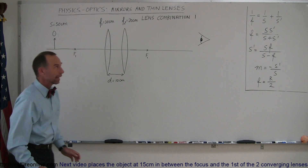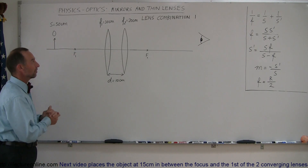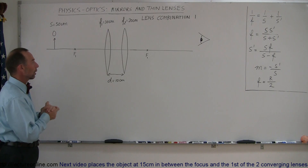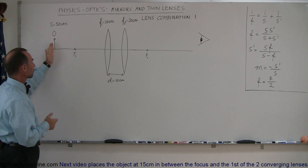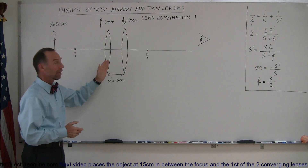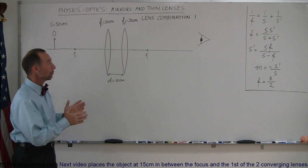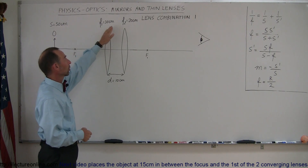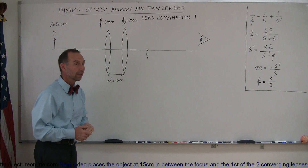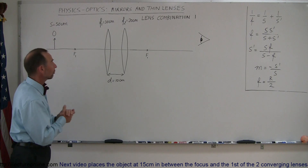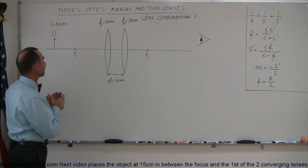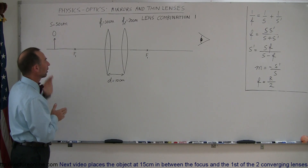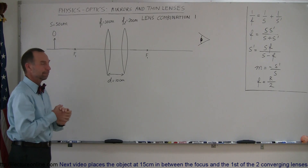Welcome to iLectureOnline. Here is a combination lens problem where we are given an object and two lenses. In this case they are two converging lenses: one has a focal length of 30 centimeters, the other has a focal length of 20 centimeters, and we're supposed to find the final image cast by this object due to the two lenses.